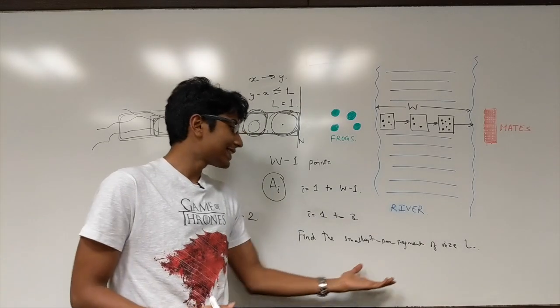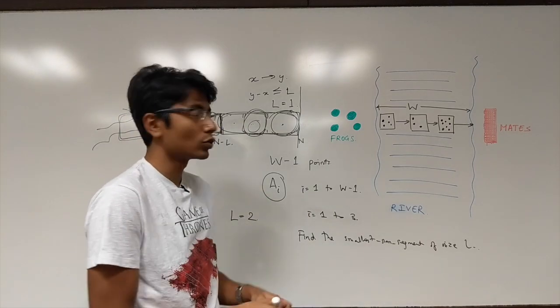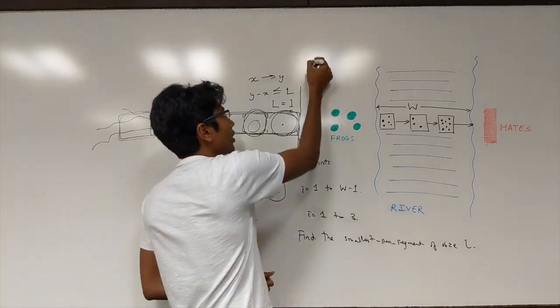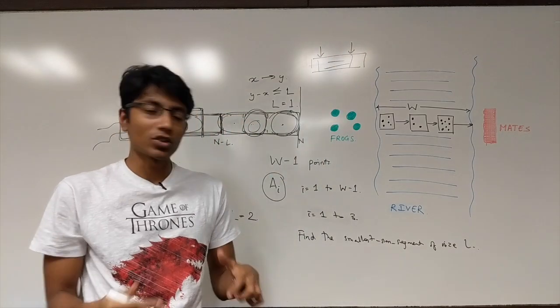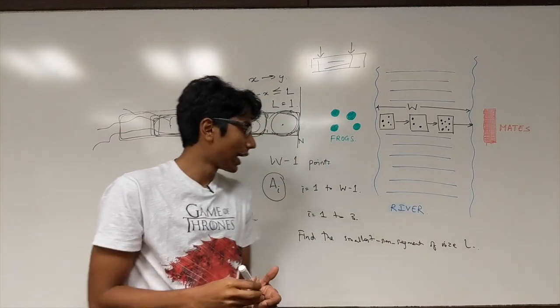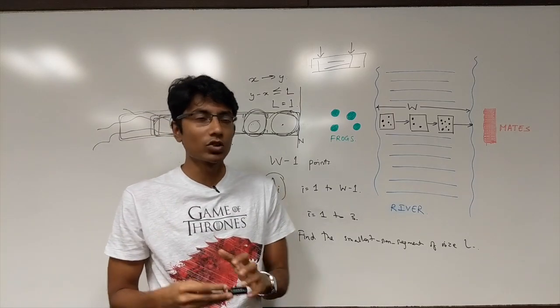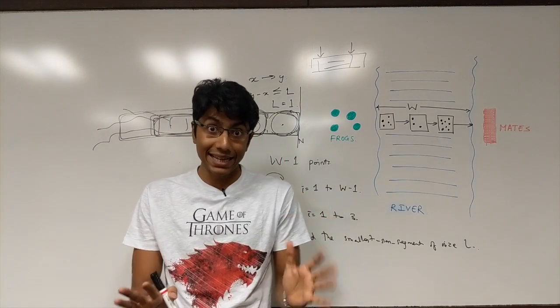Find the smallest sum segment of size L. And the solution for this is actually extremely simple. You just use a two pointer approach in an array where there's a pointer X and a pointer Y, and you're going to find the smallest segment. So the code for this is in the description below, and there's not many test cases which will, there's no tricky test case as such.